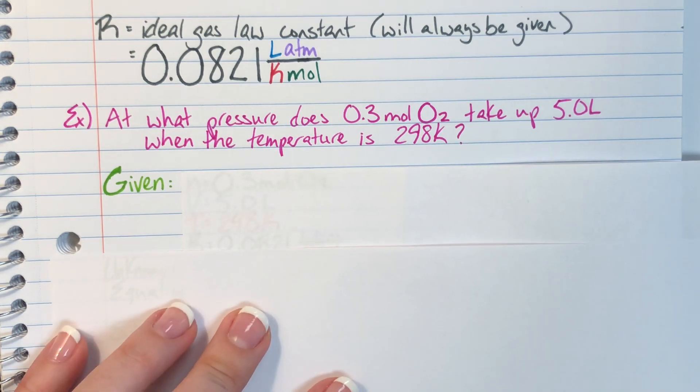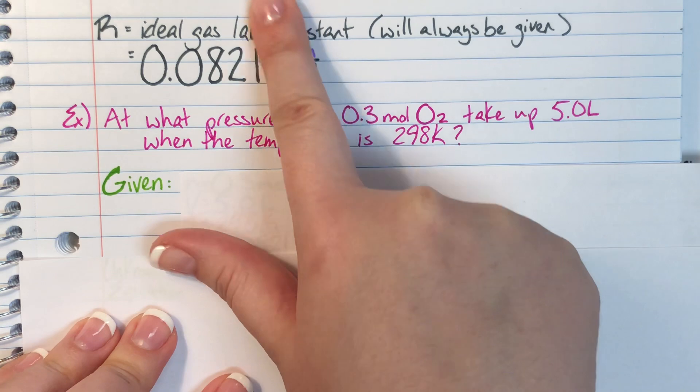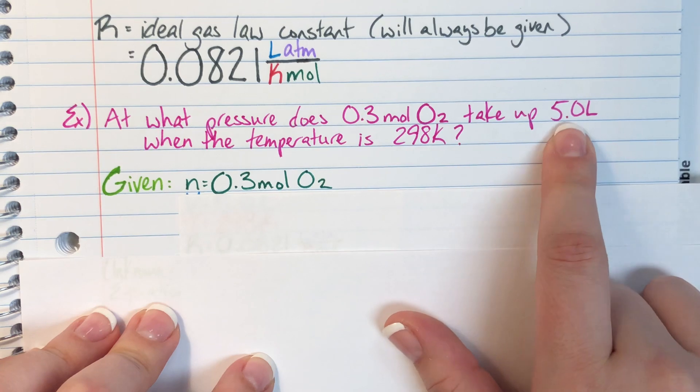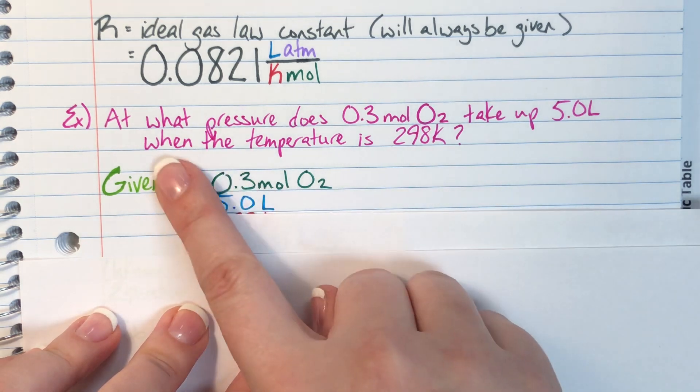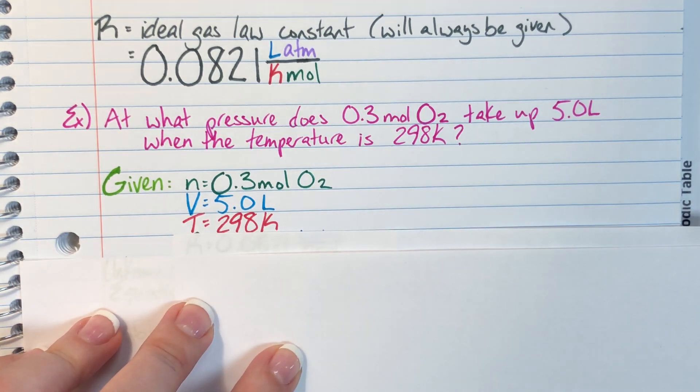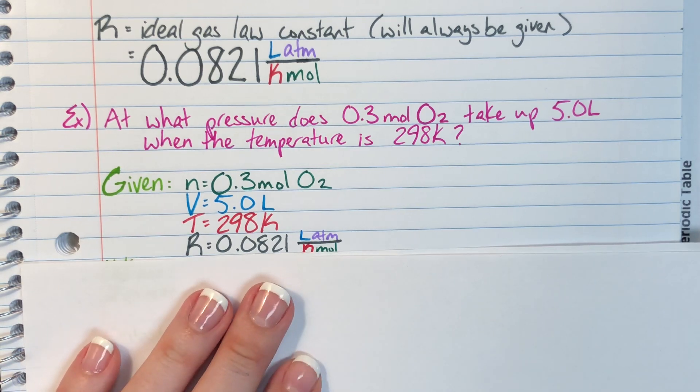Our givens are going to be directly from the actual question. The first thing that I see is 0.3 moles of oxygen. Moles is a unit for n, so n is equal to 0.3 moles of O2. Then I see it's going to take up 5.0 liters. Liters is a unit of volume, so V equals 5.0 liters. When the temperature is 298 Kelvin, so T equals 298 Kelvin. And I'm going to be utilizing R equals 0.0821 liter atmospheres per Kelvin mole.